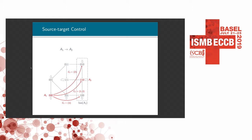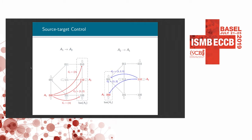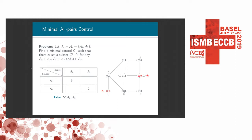For this case, there are three controls that drive the system from A1 to A2. If you are only interested in the minimum one, you choose the one with the fewest perturbations. Similarly, we can compute the source-target control to drive the system from A2 to A1. This toy example has two attractors, both single-state attractors. Let's assume both the set of source attractors and the set of target attractors include all attractors of the system.